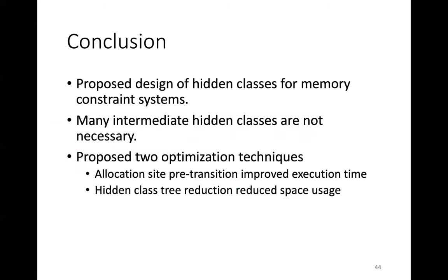In conclusion, we proposed the design of hidden classes for memory constraint systems. The key observation was that many intermediate hidden classes are not necessary. Based on this observation, we proposed two optimization techniques. One is allocation site pre-transitioning, which improves execution time. The other is hidden class tree reduction, which reduces space usage. Thank you very much.